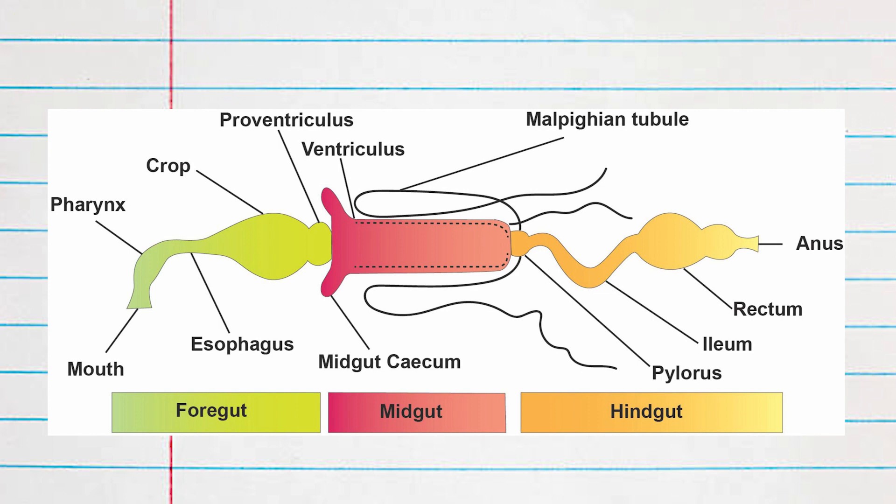The pharynx and esophagus serve as a means of delivery for food from the mouth to the midgut, and the crop serves as a site of storage until food is ready to be digested. The ending of the foregut is marked by the proventriculus, a thick-walled organ that crushes food and deposits it in the midgut. This section is lined with cuticle and is thus shed when molting.